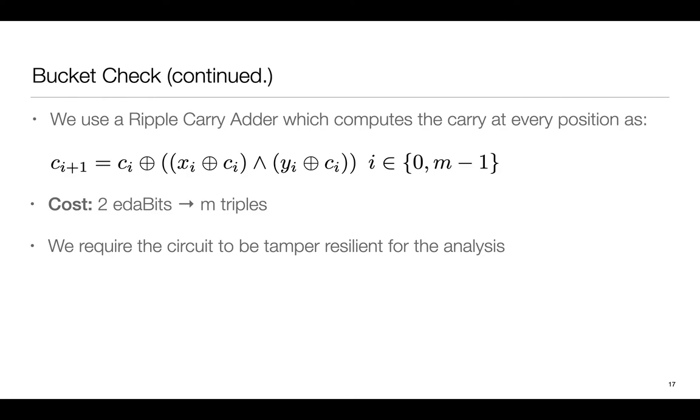Going a little deeper, this is the exact adder circuit we use, a standard ripple-carry adder circuit which computes the carry as shown. To compute m carry bits, we need a total of m TinyOT triples. So the cost to add 2 EDABITS of length m is m triples. Before we analyze the probability that the adversary wins in bucket check, we describe another property we require from the circuit, which restricts the power of the adversary significantly, making the analysis a lot easier.